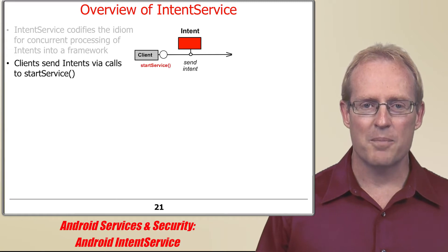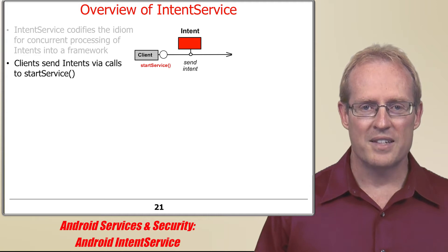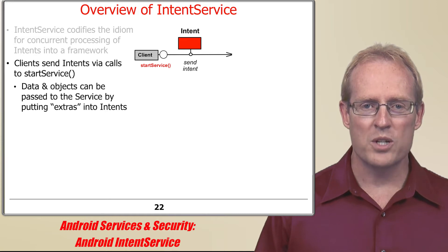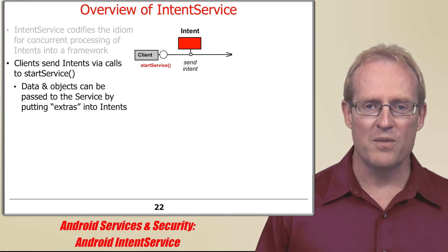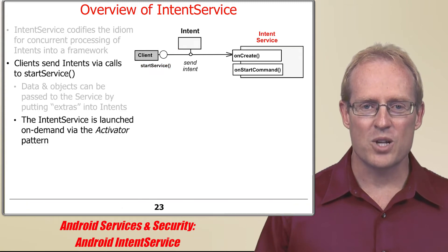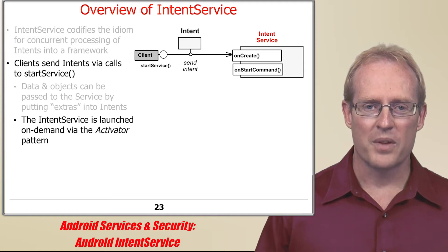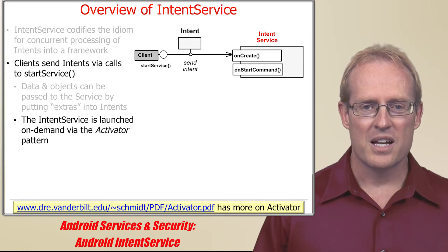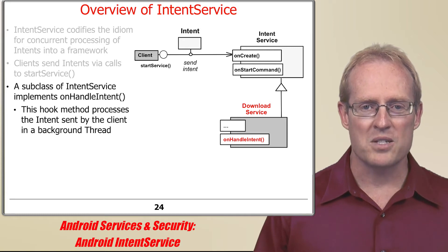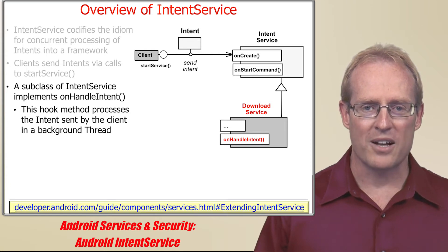In the download application example, a client sends intents via calls to the startService method. Data and even objects can be passed to the intent service by putting extras into the intents, which is used throughout Android to exchange information between activities or between an activity and a service. The intent service is started on-demand via the activator pattern, which efficiently and transparently launches services on-demand. Subclasses of the intent service implement the onHandleIntent hook method to process the intent sent by the client concurrently in a background thread by automatically performing the outlined steps.